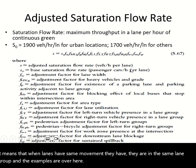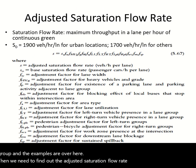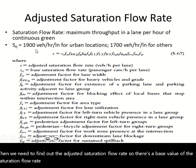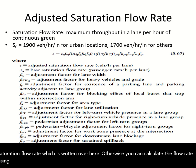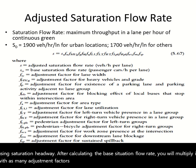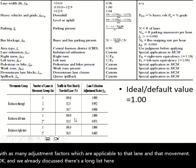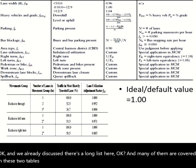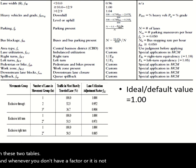Then we need to find out the adjusted saturation flow rate. There is a base value of the saturation flow rate, or you can calculate the flow rate using saturation headway. After calculating the base saturation flow rate, you multiply it with as many adjustment factors as are applicable to that lane and movement. There is a long list, many of them covered in two tables, and whenever a factor is not applicable you take it equal to one.